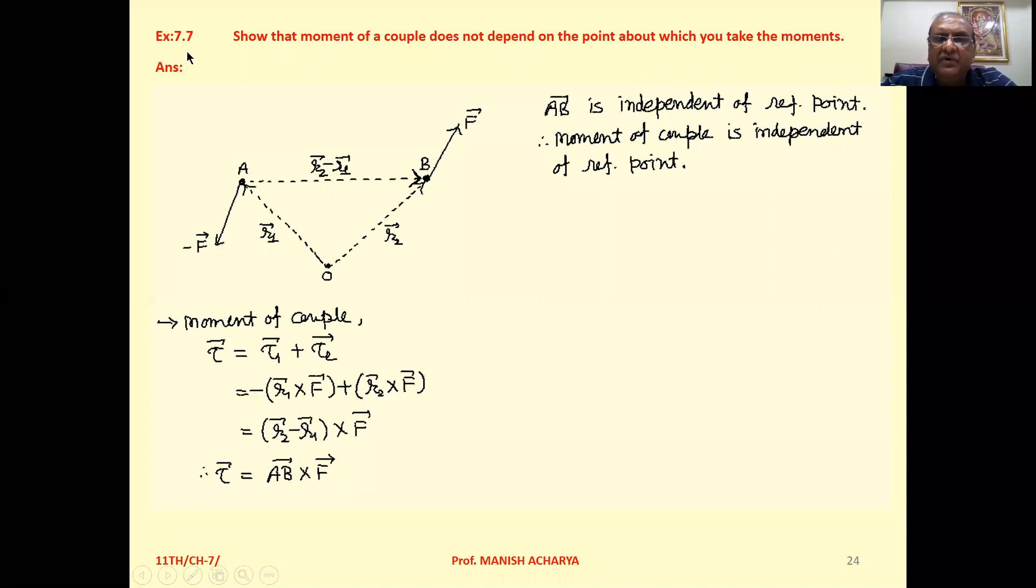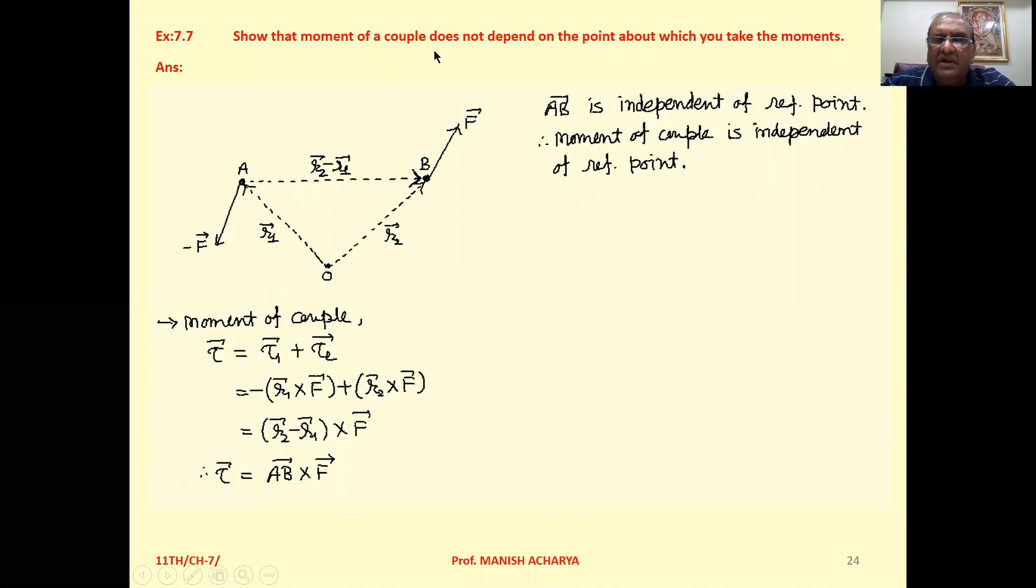Example 7.7 shows that moment of couple does not depend on the point about which you take the moments.